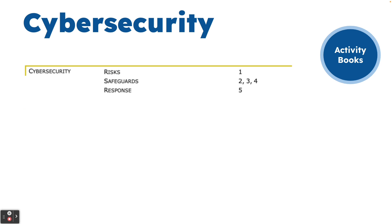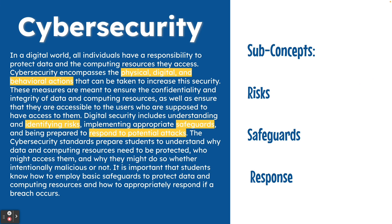Next we have cyber security, which has five standards broken down into risks, safeguards, and response. It is a smaller category but has high-impact information crucial for students to understand. Cyber security and digital literacy tie very nicely with impacts of computing, so you can overlap these standards. Here we're talking about behavior both online and in physical contexts — identifying risks, safeguarding your information, and responding to potential attacks. This ties into New York's Ed Law 2D as far as protecting personally identifiable information.